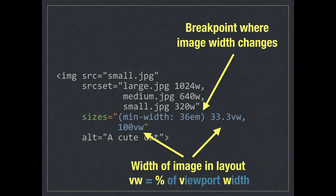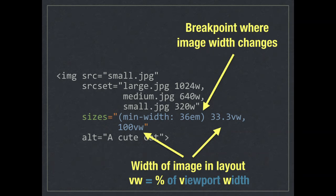VW stands for viewport width. It's well supported and basically means the same as percent, except it's always a percentage of the entire viewport width. The reason to use it is that at the point the image gets downloaded, the browser doesn't know any CSS and doesn't know what a percent refers to — the only thing it can know is the viewport width. So minimum width of 36em is 600 pixels. If the screen is smaller than 600 pixels, it falls back to the next option: 100vw — the image fills the whole screen.